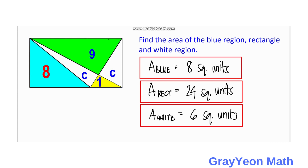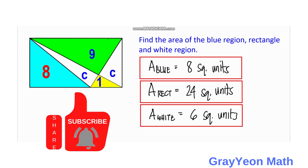To summarize: the area of the blue is 8 square units, the area of the rectangle is 24 square units, and the area of the white region is 6 square units. These are our answers. Thank you for watching until the end of the video. Please like if you enjoyed the solution, and don't forget to subscribe and hit the bell icon for more math videos.